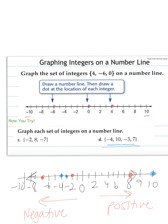And last one is 7, so we count positive 7, to the right: 1, 2, 3, 4, 5, 6, 7, and there is our point. So that is how we graph integers on a number line.